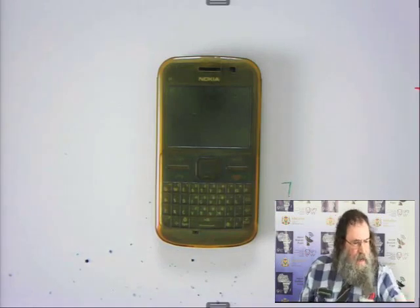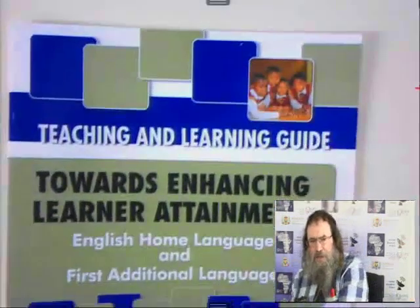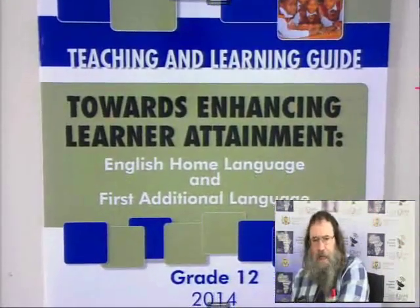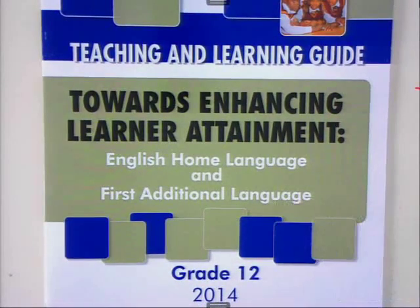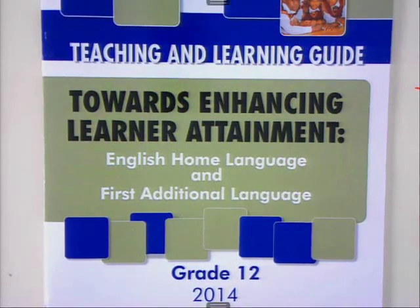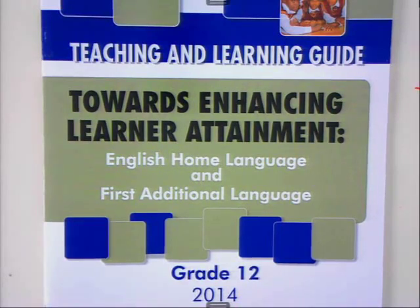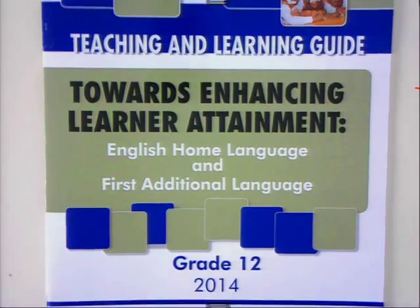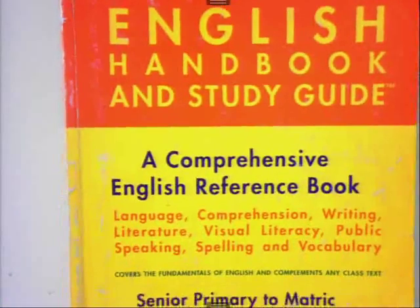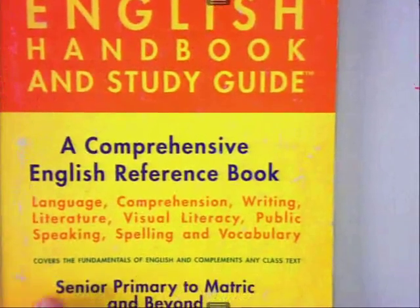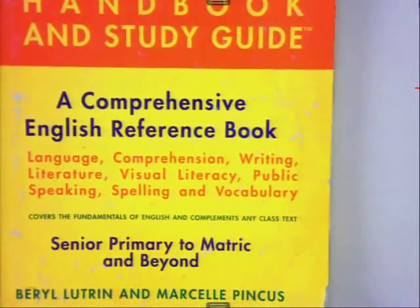Today I'll be referring to various books. One of the most important ones is this here. I assume most schools have it. The section in this book on visual literacy is really comprehensive — it goes into great detail about body language, facial expressions, and all that sort of thing. Another book that I always recommend is, of course, this somewhat tatty book here. This is by Lutron and Pincus — it is the English Handbook and Study Guide.